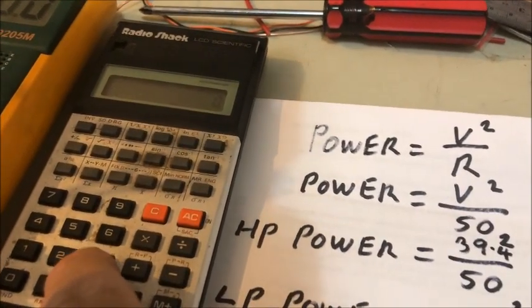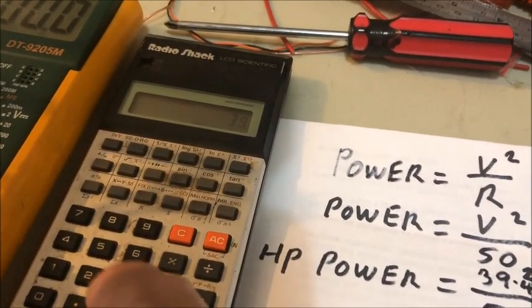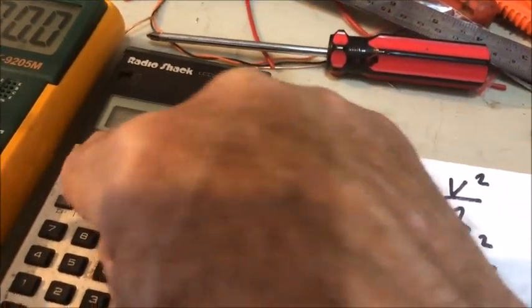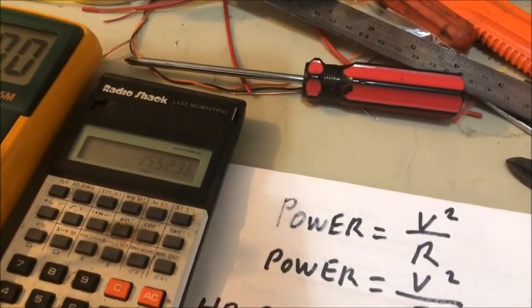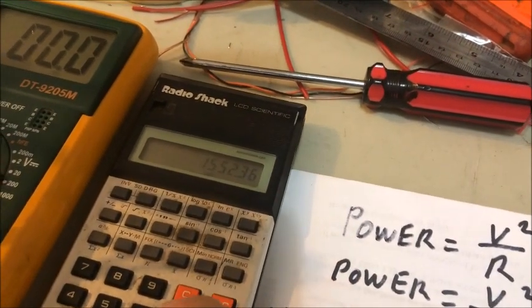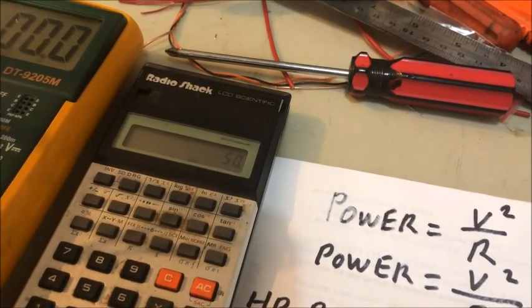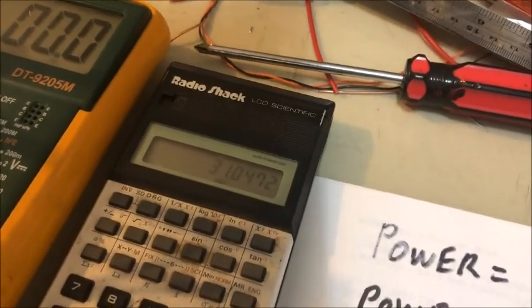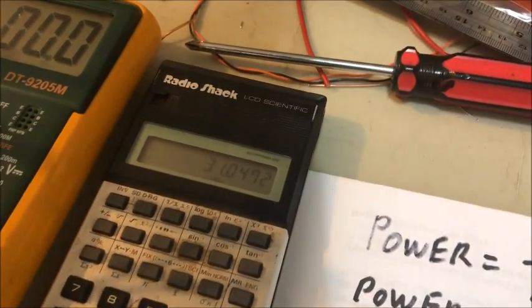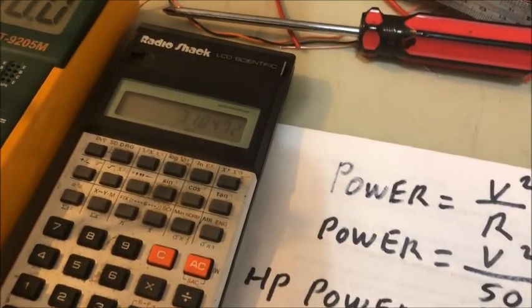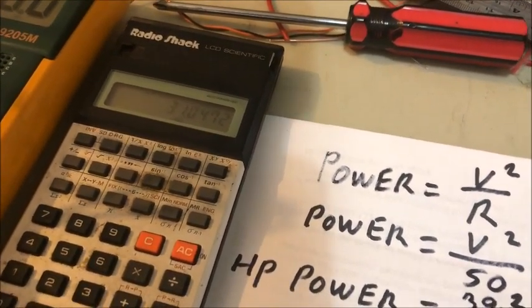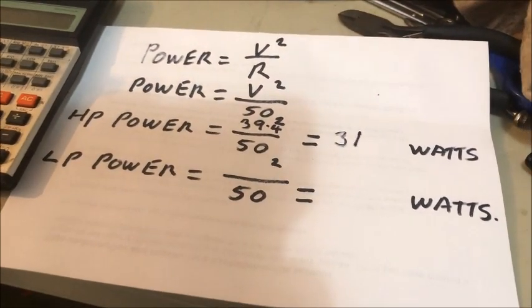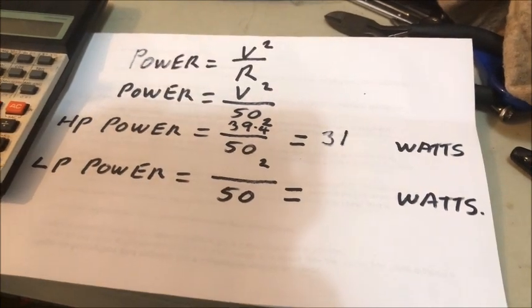Okay, so here we go. 39.4. That's close enough. Inverse squared. We've got a number there. And we just divide that by 50 ohms being the resistance. So the transmitter is putting out 31 watts. So we've got 31 watts coming out. Very good. Looking at the specifications on the radio between 25 and 30 watts. Very happy with that. 31 watts coming out.